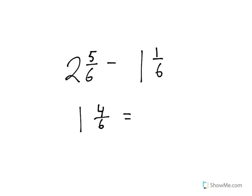If we have subtraction, it's pretty easy when it's like this: 2 5/6 minus 1 1/6. Because 2 minus 1 is 1, and 5/6 minus 1/6 is 4/6, which can be simplified to 1 2/3.